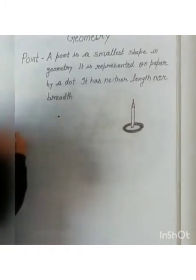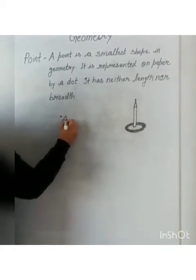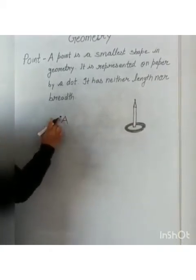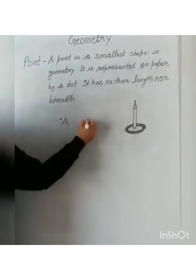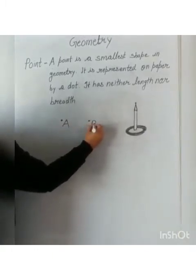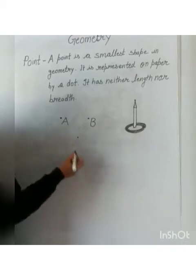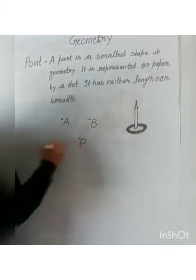So, we will draw a dot and we will represent it by a capital letter A. This is called point A. This is called point B. We can take any alphabet. This is point P.